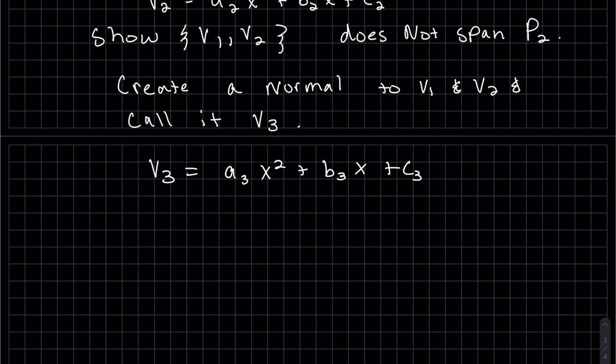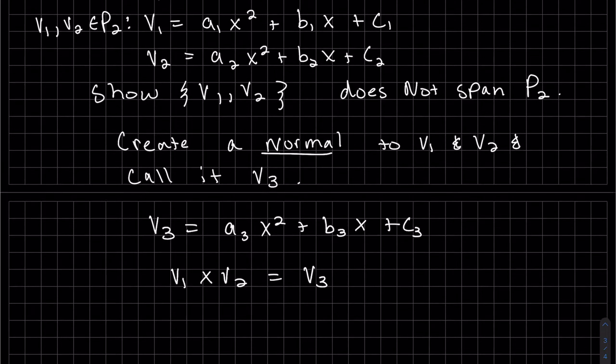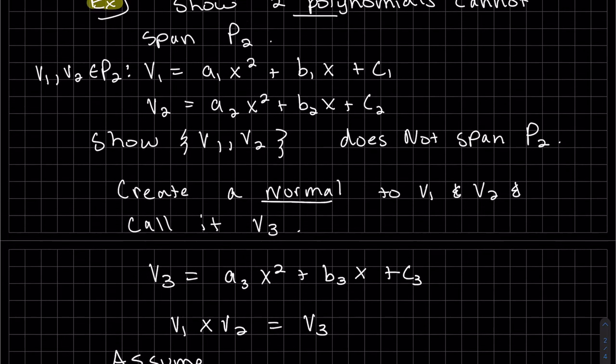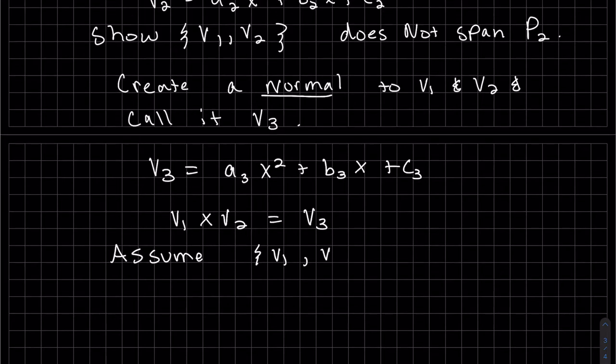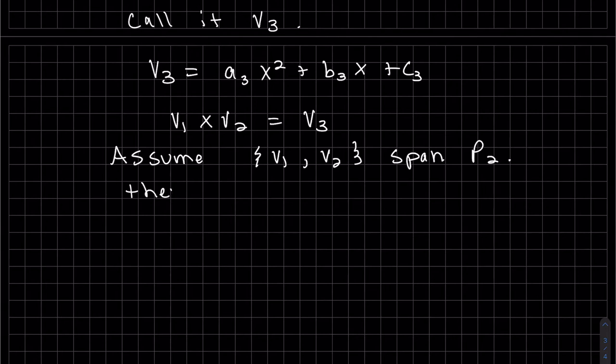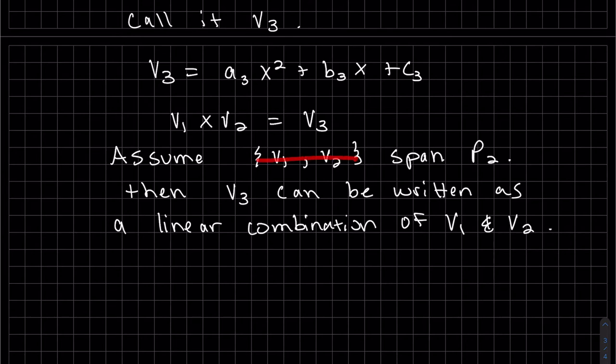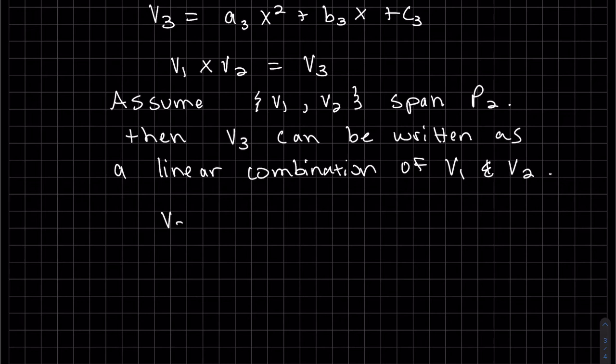How are we going to create that normal? The normal will be perpendicular—we'll cross v1 and v2. If they span P2, then any vector—and I'm going to actually choose v3 specifically—can be written as a linear combination of v1 and v2.